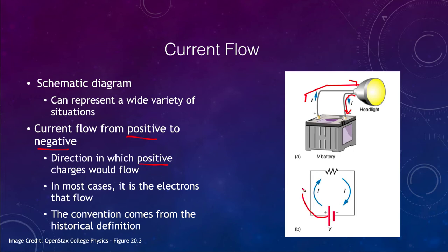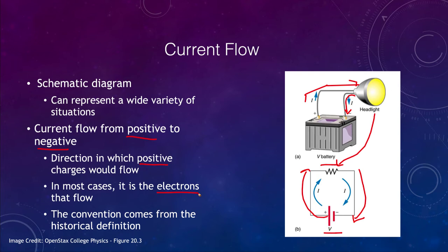In the circuit diagram, the voltage symbol represents our battery and the resistance symbol represents our headlight. In most cases, what is really flowing through a wire are electrons — the negative charges. So the conventional current direction is really a historical definition: electrons actually move in the opposite direction to the way we say current flows. This came about before we realized it was electrons that were actually flowing, which is why the definition ends up being backwards.